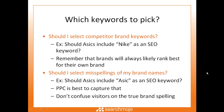Second, should you select misspellings of your brand name — for example, should ASICS include a misspelling as an SEO keyword? Pay-per-click advertising is probably best for capturing those, because you don't want to confuse visitors on the true brand spelling. If you put a misspelling as a keyword into your website copy, you'll confuse visitors on what your true brand spelling is. Use pay-per-click advertising for those types of options instead.